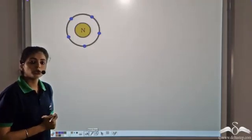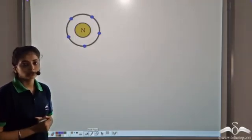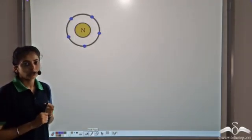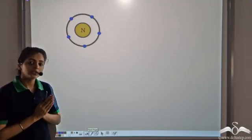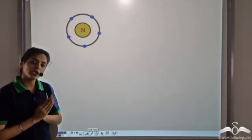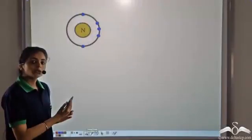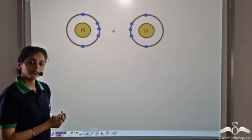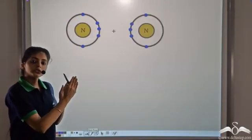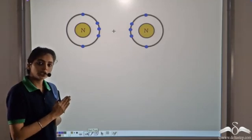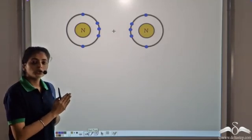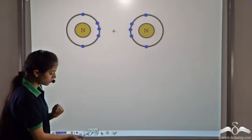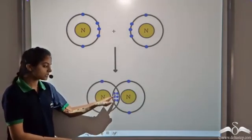Let's take an example of nitrogen. Nitrogen has five valence electrons. In order to complete the octet, it needs three more electrons. It combines with another nitrogen atom, and both nitrogen atoms are short of three electrons, so they share three electrons each.